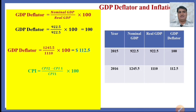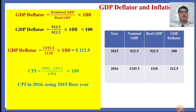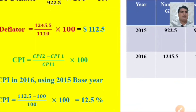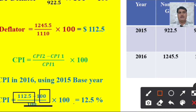Now the main target is calculating the CPI, or consumer price index, and the inflation rate using the GDP deflator. The inflation rate formula is: (CPI of current year minus CPI of base year) divided by the CPI of base year, multiplied by 100. Using 2015 as the base year, the CPI for 2016 is 12.5 percent. Here, 112.5 is the current year deflator and 100 is the base year deflator, giving a total rise in price of 12.5 percent.